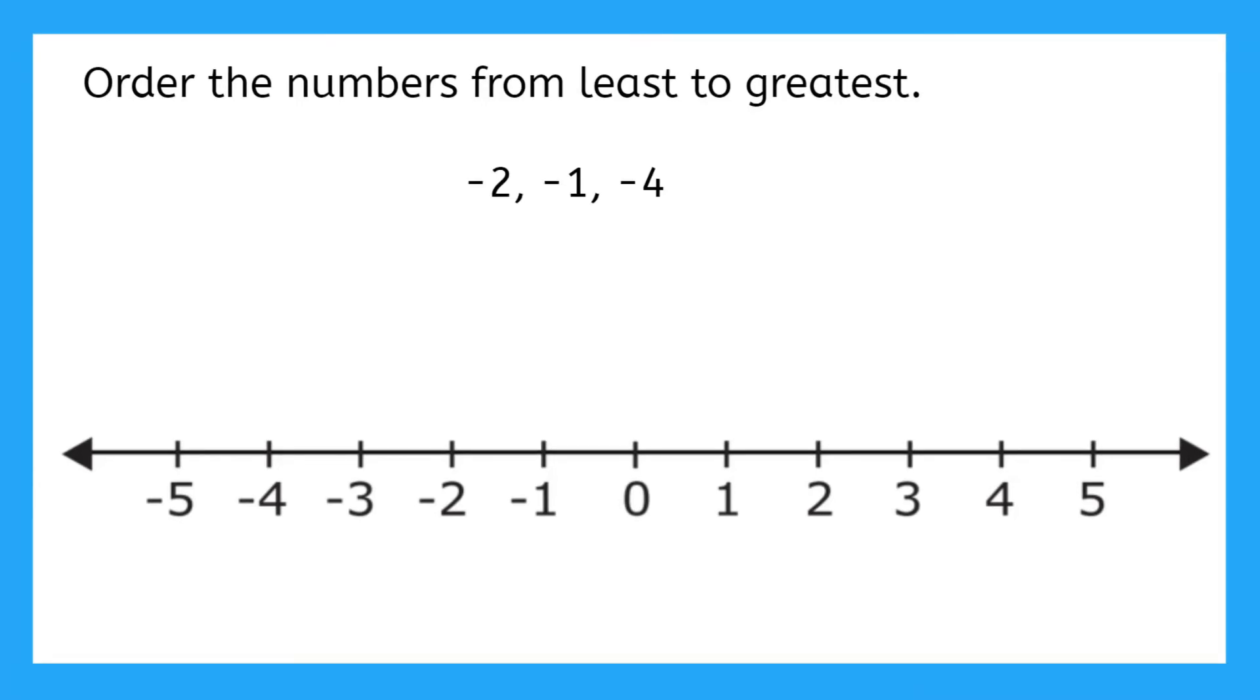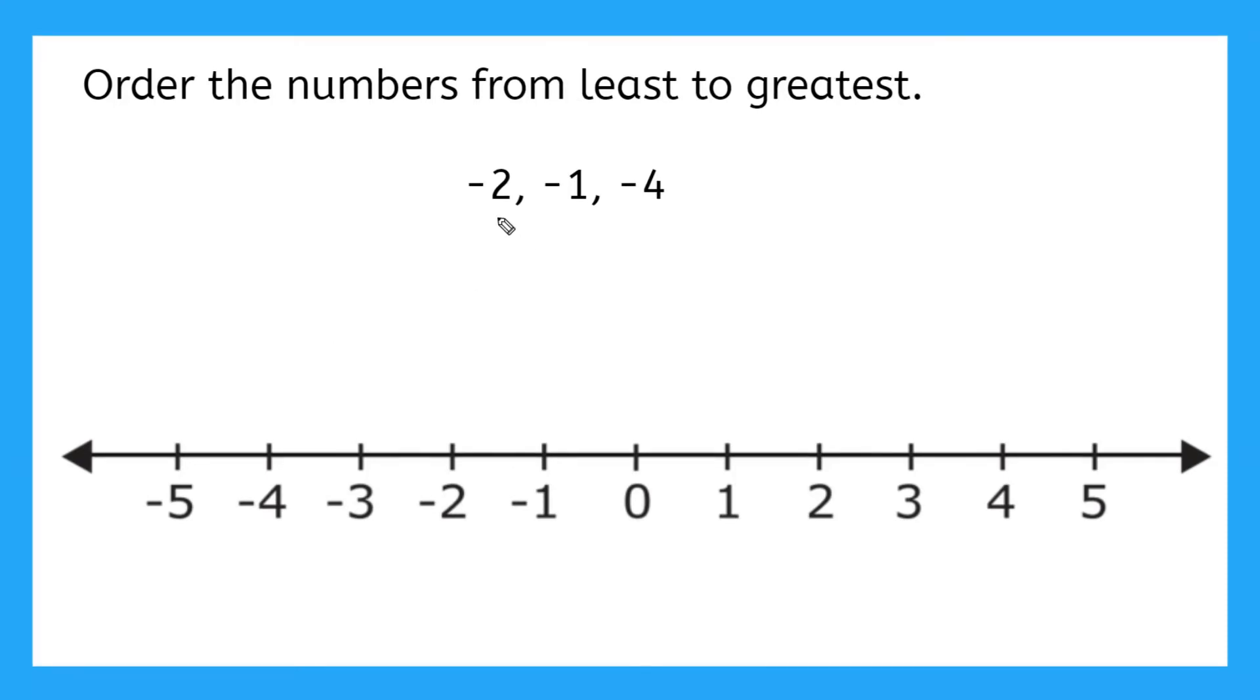Our first rule says the negative number closest to zero is the biggest number. What number here is closest to zero?